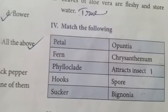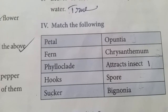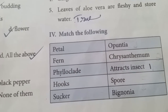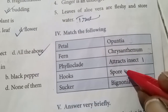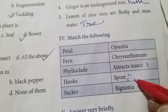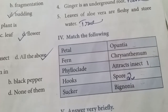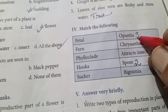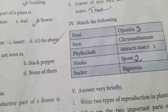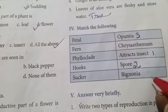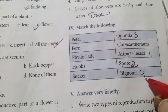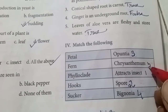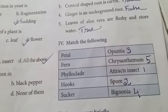Match the following: Petals are the attractive parts of the flower that attract insects. Fern is a plant that involves spore formation, so the answer for fern is spore. Phylloclade is present in Opuntia, where stem and leaves are modified as a thick fleshy structure. Hooks are found in Bignonia, where the stems have spines and hooks. Sucker is found in chrysanthemum plant.